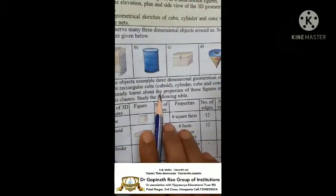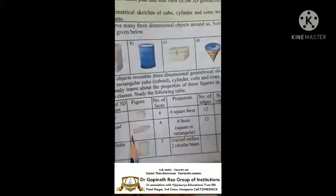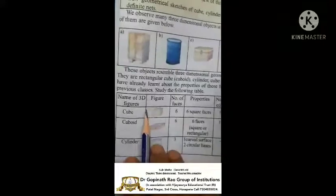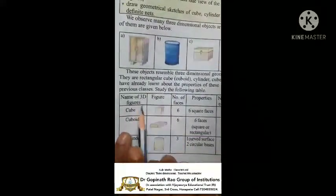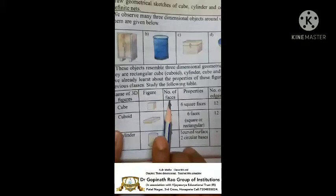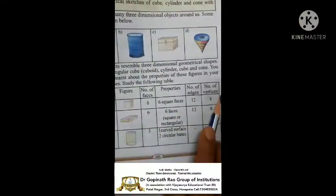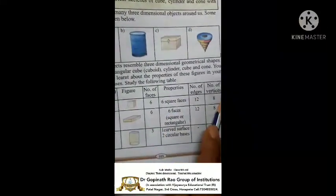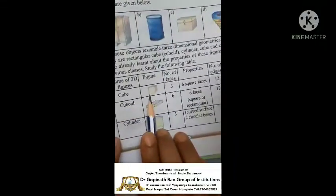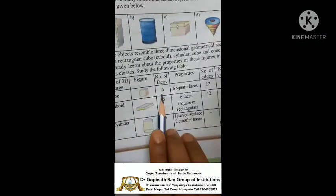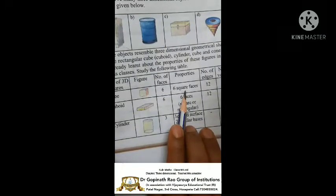What are the properties and what are the figures? You know that — I am explaining here also. The table covers: name of figures, number of faces, properties, number of edges, and number of vertices. First one: cube. Number of faces is 6. Properties: six square faces.